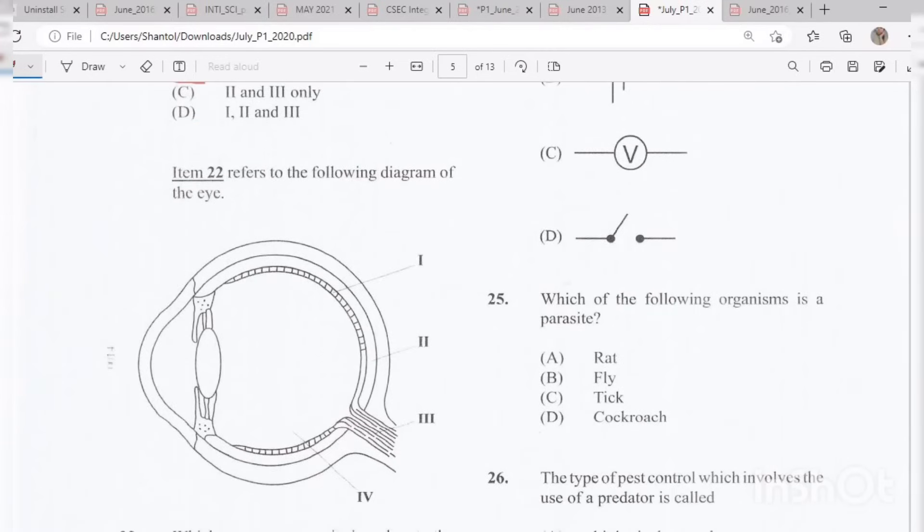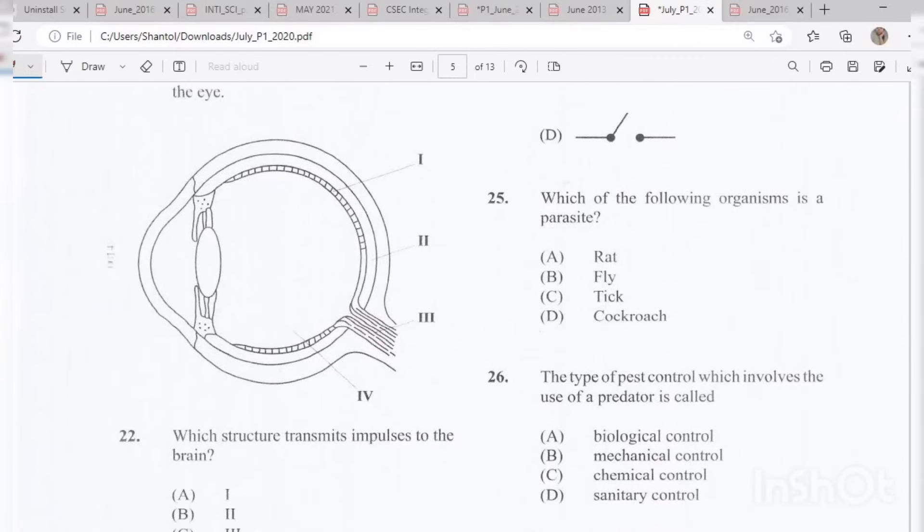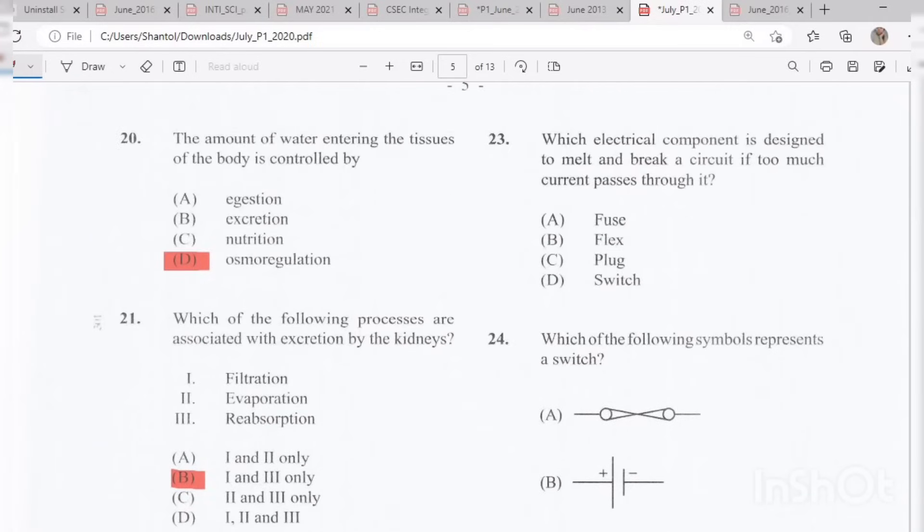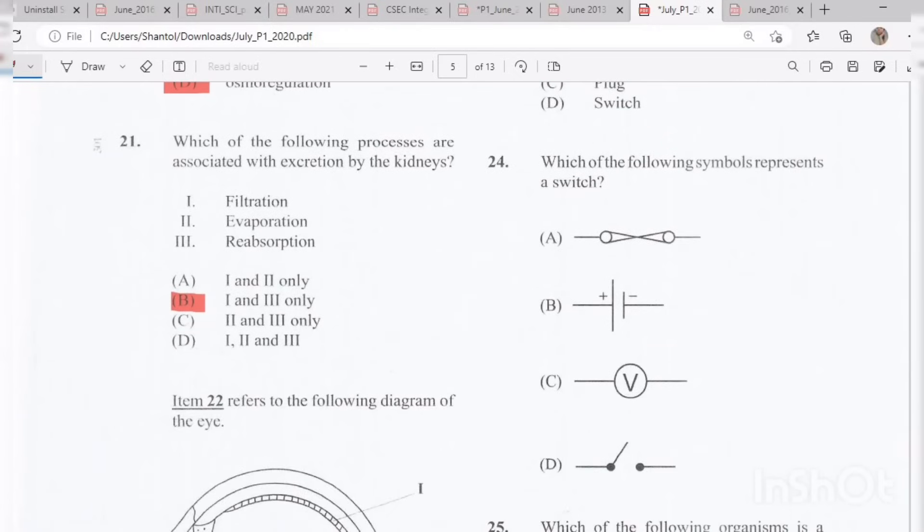Question 22: It refers to the following diagram of the eye. Which structure transmits impulses to the brain? The answer would be C, the optic nerve. Question 23: Which electrical component is designed to melt and break a circuit if too much current passes through it? The answer is A, a fuse. Question 24: Which of the following symbols represents a switch? The answer is D.